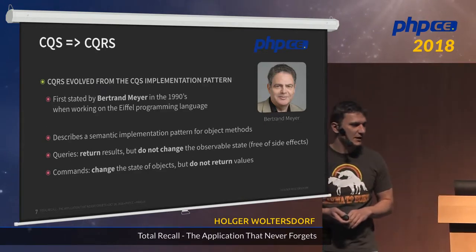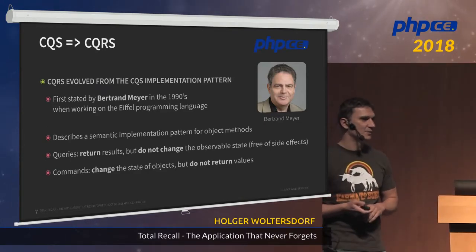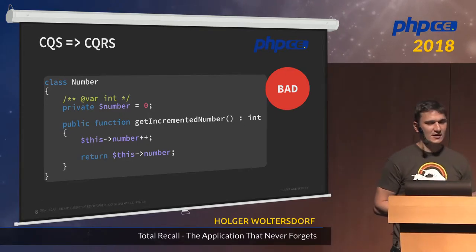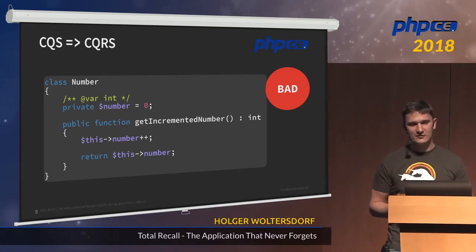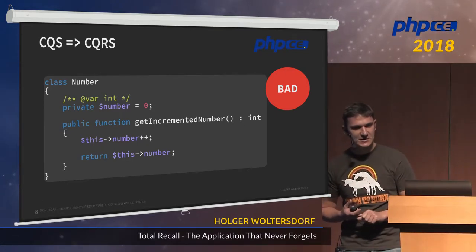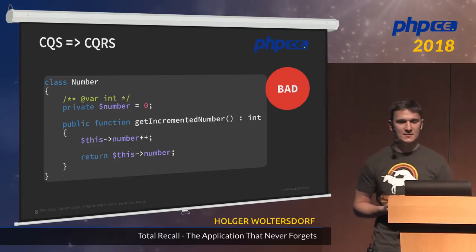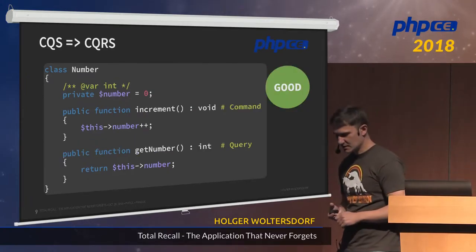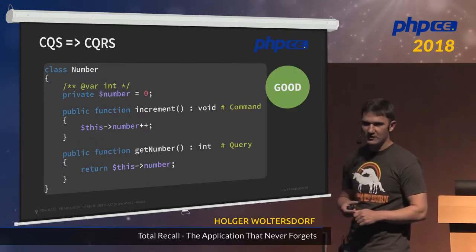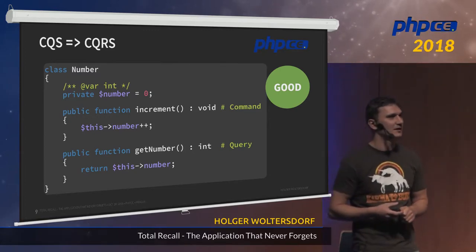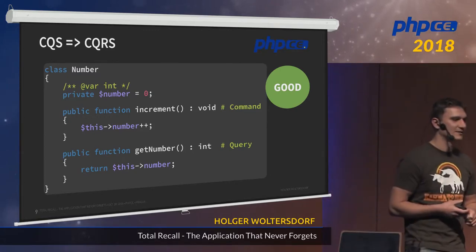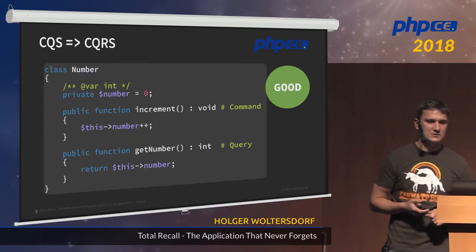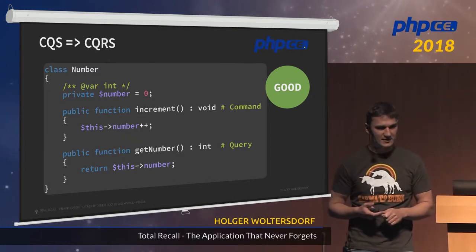Here's a bad example — we are changing the state and returning something in the same method. The good example would be this: we have a command method 'increment' and a 'getNumber', which is the query. So we have separated this. Bertrand Meyer described this for objects.